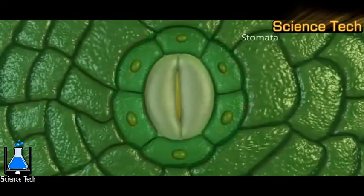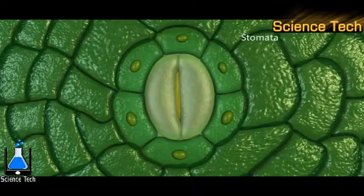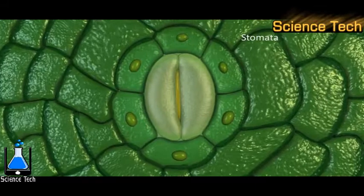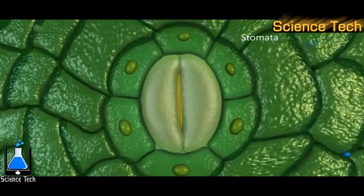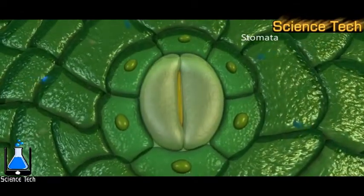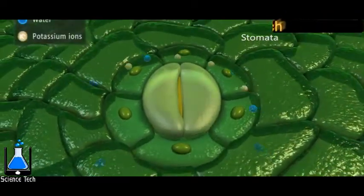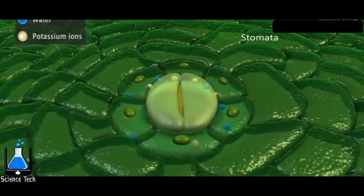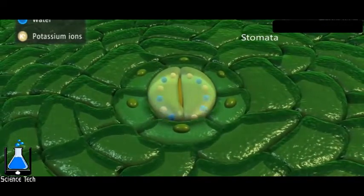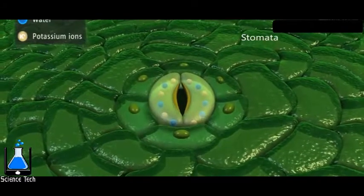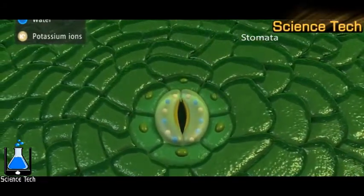If transpiration happens throughout the day, then there will be a great loss of water. This is controlled by the stomatal opening and closing mechanism. During the daytime, water enters into the guard cells along with the potassium ions. This brings about a change in the shape of the guard cells and the stoma opens.